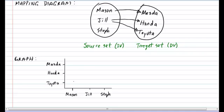And again let's represent the relationships. Mason drives a Mazda, so I put a coordinate for him. Jill drives a Honda, so I put a coordinate for her. And she also drives a Toyota. Put a coordinate for her. And poor Steph still doesn't drive any of the cars.